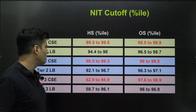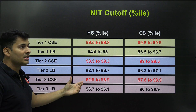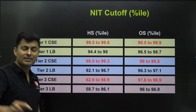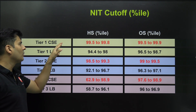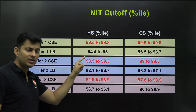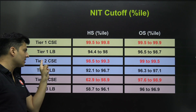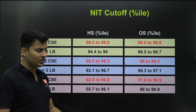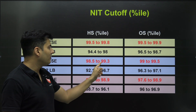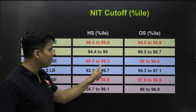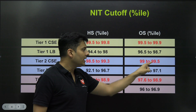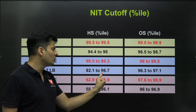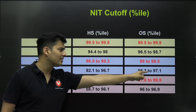If you look at tier 2 NITs — many kids will prefer tier 2 NITs for the computer science branch rather than going to a top college with a lower branch, since CS is obviously in demand. For tier 2 NITs CS, you see 98.5 to 99.3, and again that magic number 99 comes up. For outside state students it's 99 to 99.5, but for lowest branches it goes to 92 to 96.